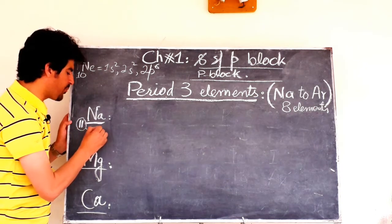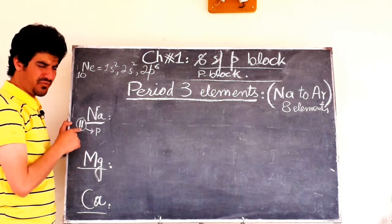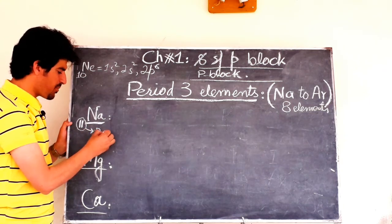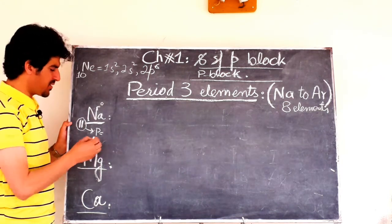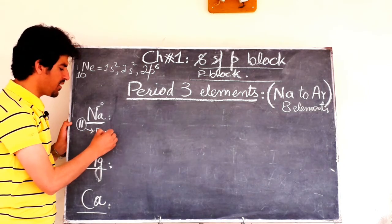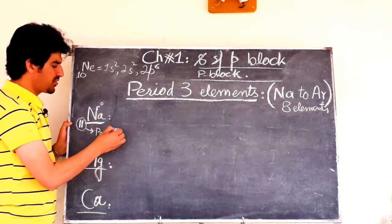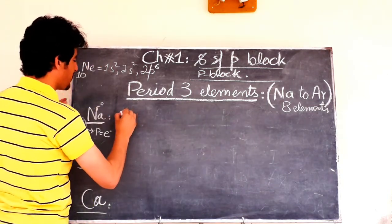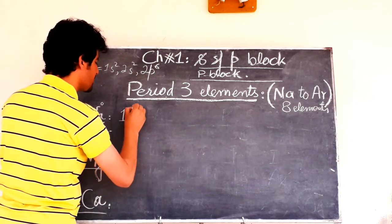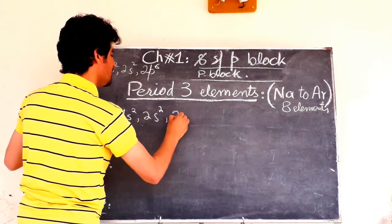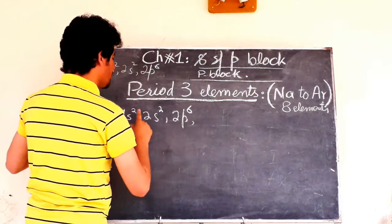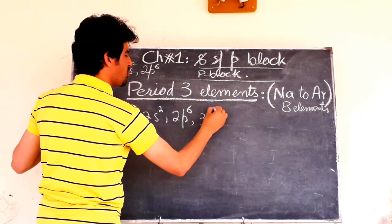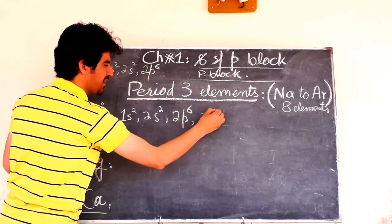Sodium has atomic number 11, meaning 11 protons. For a neutral atom, the number of protons equals the number of electrons. So sodium has 11 electrons. We fill: 1s², 2s², 2p⁶ — that accounts for 10 electrons — and one electron is left, which goes into 3s¹.